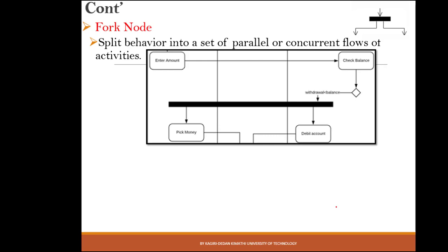The fork node is used when two or more activities are to be undertaken in parallel or concurrently. For example, after the ATM confirms that the account balance is greater than the requested amount, two activities happen simultaneously: the customer is prompted to pick the money, and at the same time the customer's account is debited by the withdrawn amount.